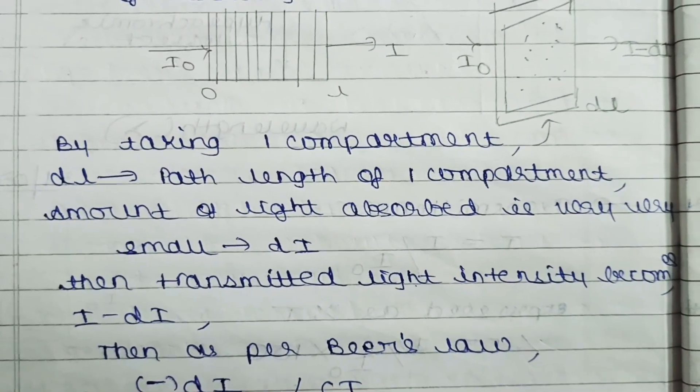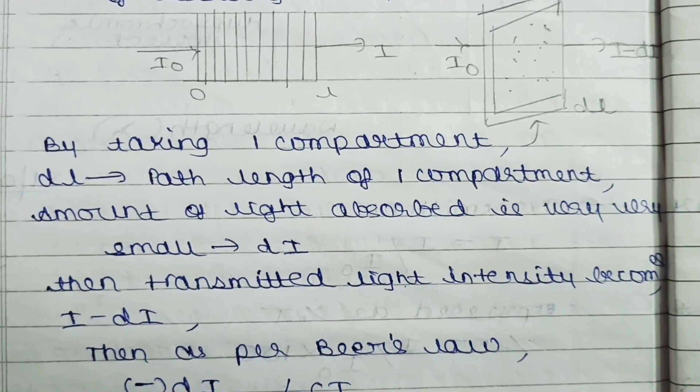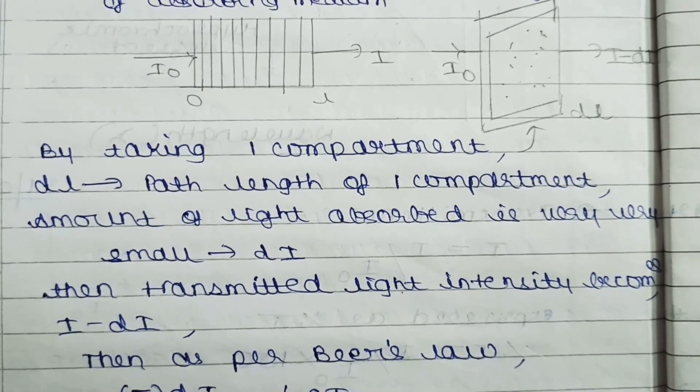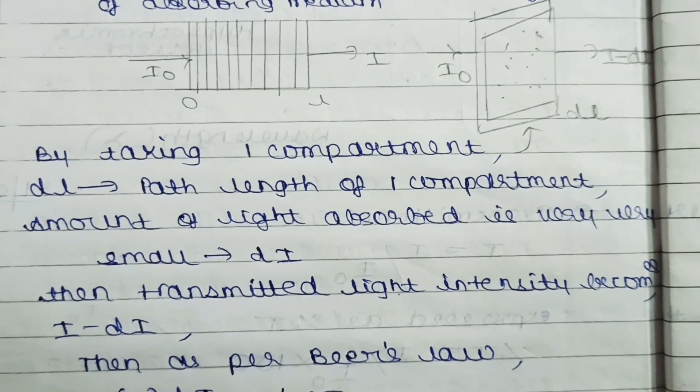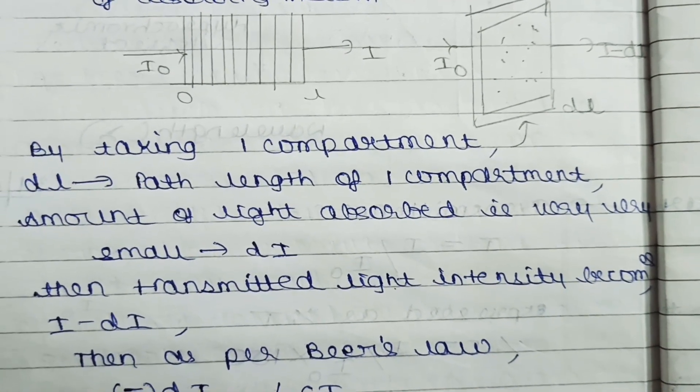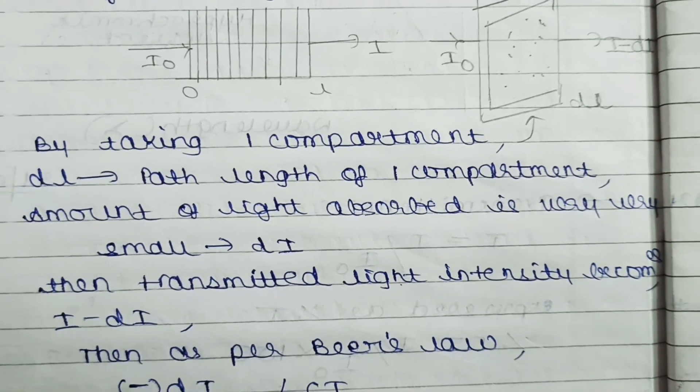By representing this in a schematic diagram, for example, let's take a beaker. In the beaker, the starting length is 0 and the final length is L. Incident light is I₀ and the final transmitted light is I. In the beaker, we have the substance added into the solution.